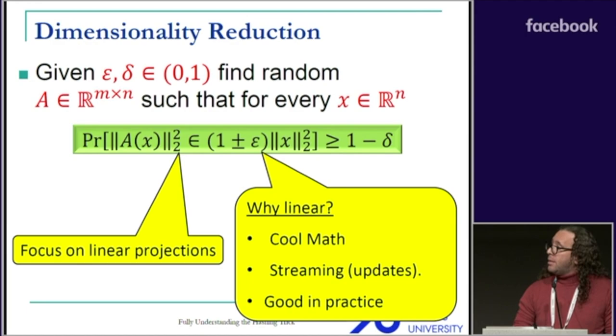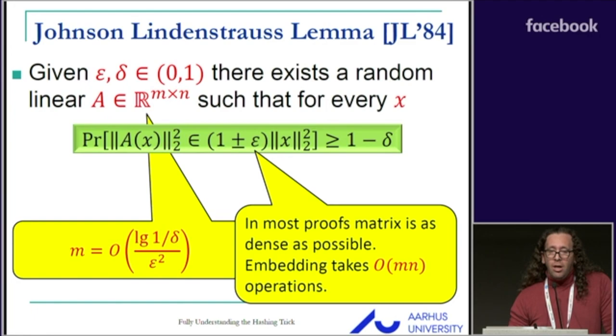One fundamental result in this field is the Johnson-Lindenstrauss lemma from the 1980s. They achieved exactly this with target dimension that does not depend on the original feature dimension, but only on delta and epsilon.